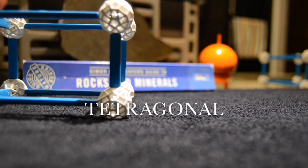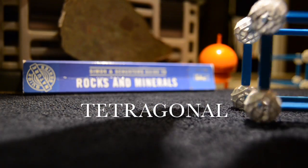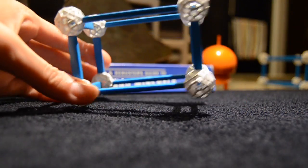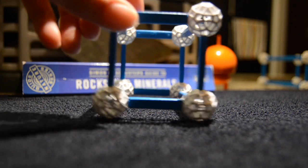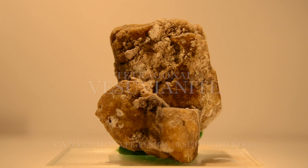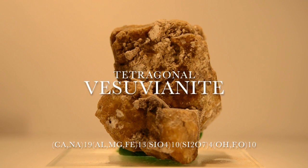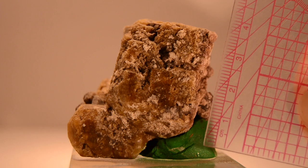The tetragonal system has two equal axes and equal angles between each axis. Remember the gift box? If we extend it in one direction, it kind of looks like a refrigerator. Vesuvanite is an example of a mineral that belongs to the tetragonal system.